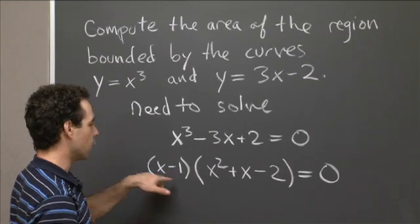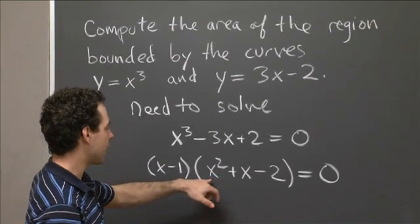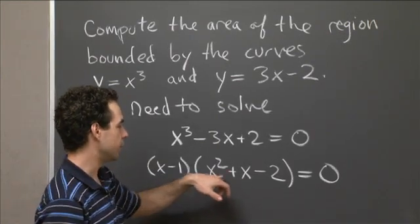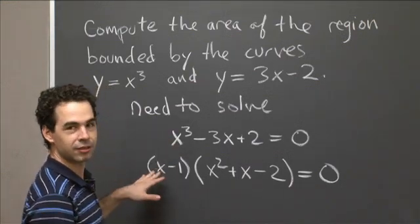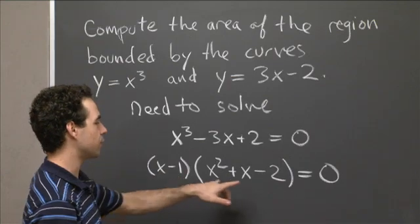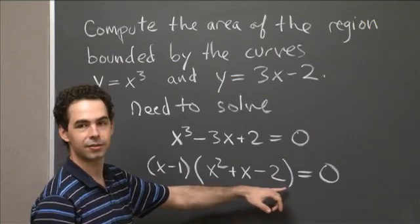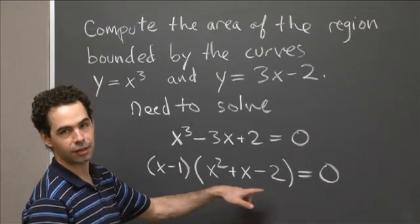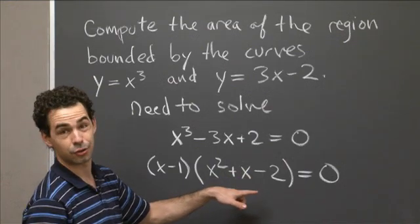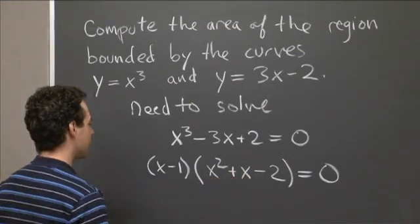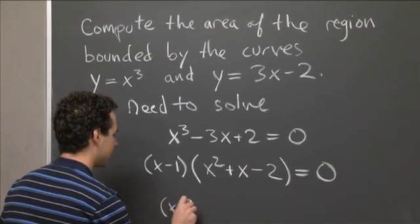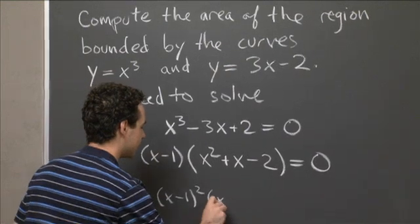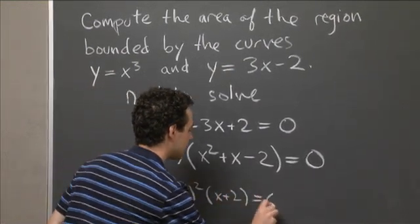for the places where this is intersection, where these intersect, we have either x equals 1 or x squared plus x minus 2 equals 0, and now here you can again factor or use the quadratic equation or what have you. And you can see, so we have that this actually fully factors as x minus 1 squared times x plus 2 equals 0,